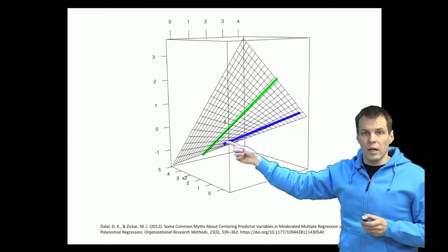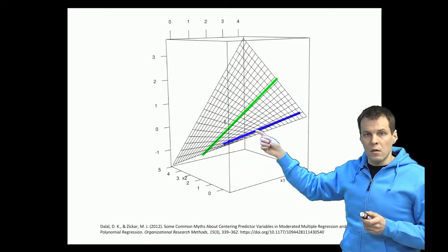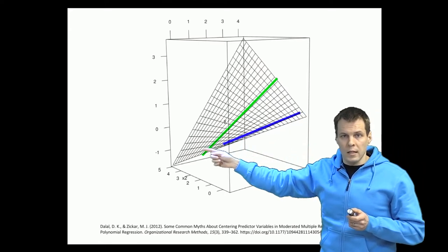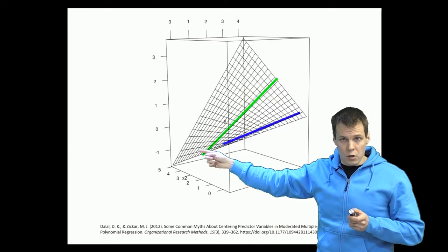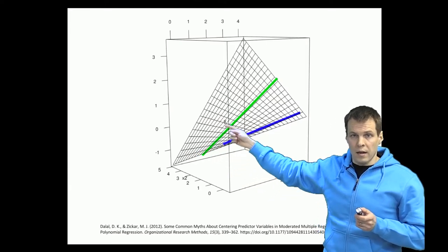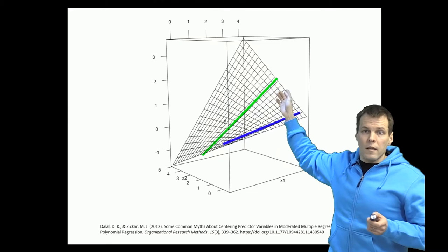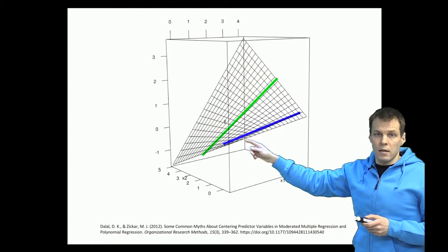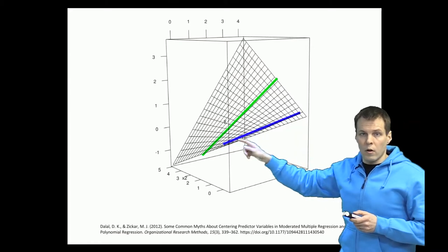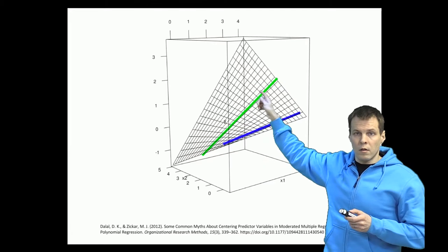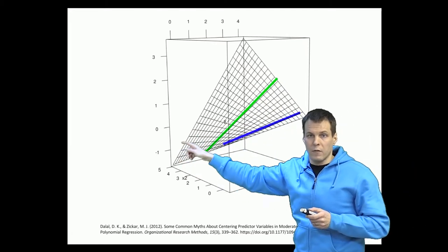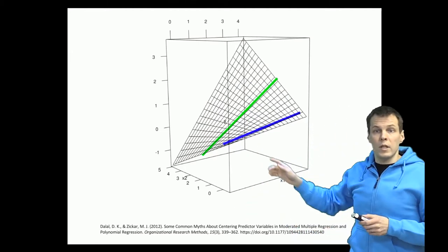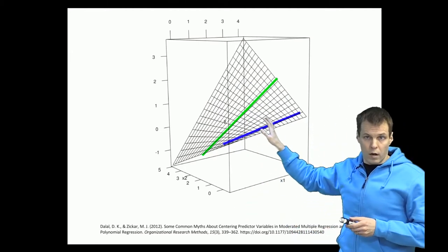When we center instead of taking the effect when X2 is zero, we take the effect when X2 is at its mean. So we take this green line in the middle. So the centering just influences which of these possible lines do we take it from here, from here or perhaps all the way from the other end of the data. So it just changes at which part of the regression plane we are looking at.